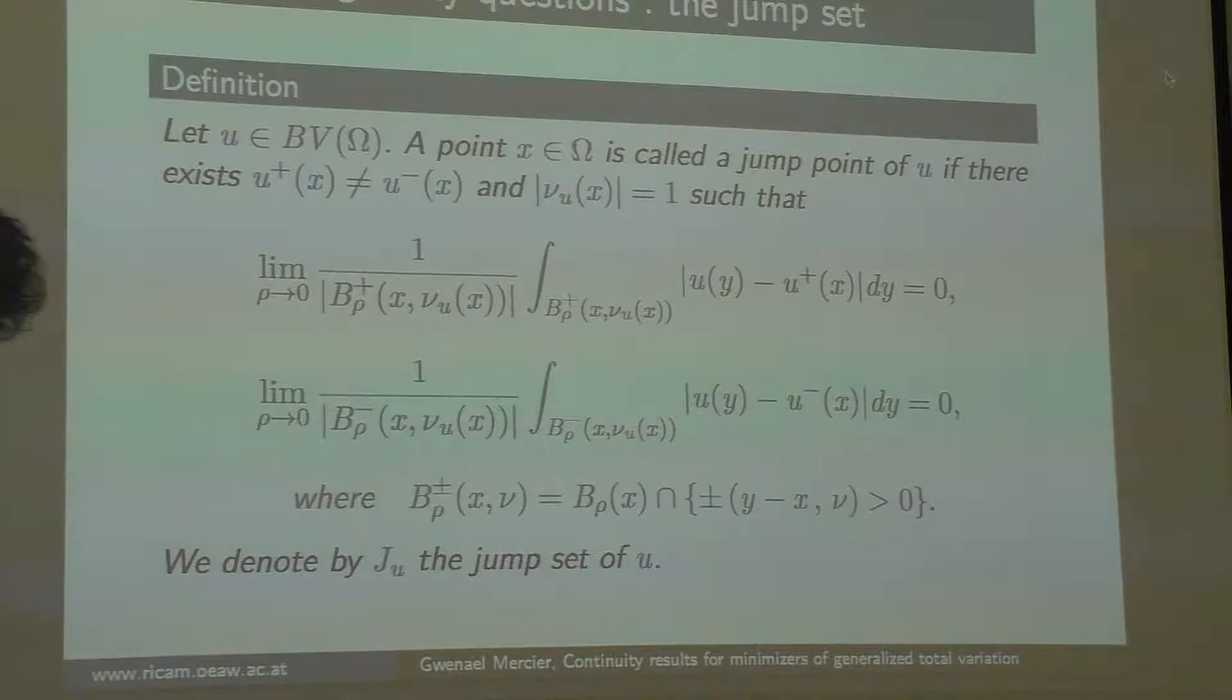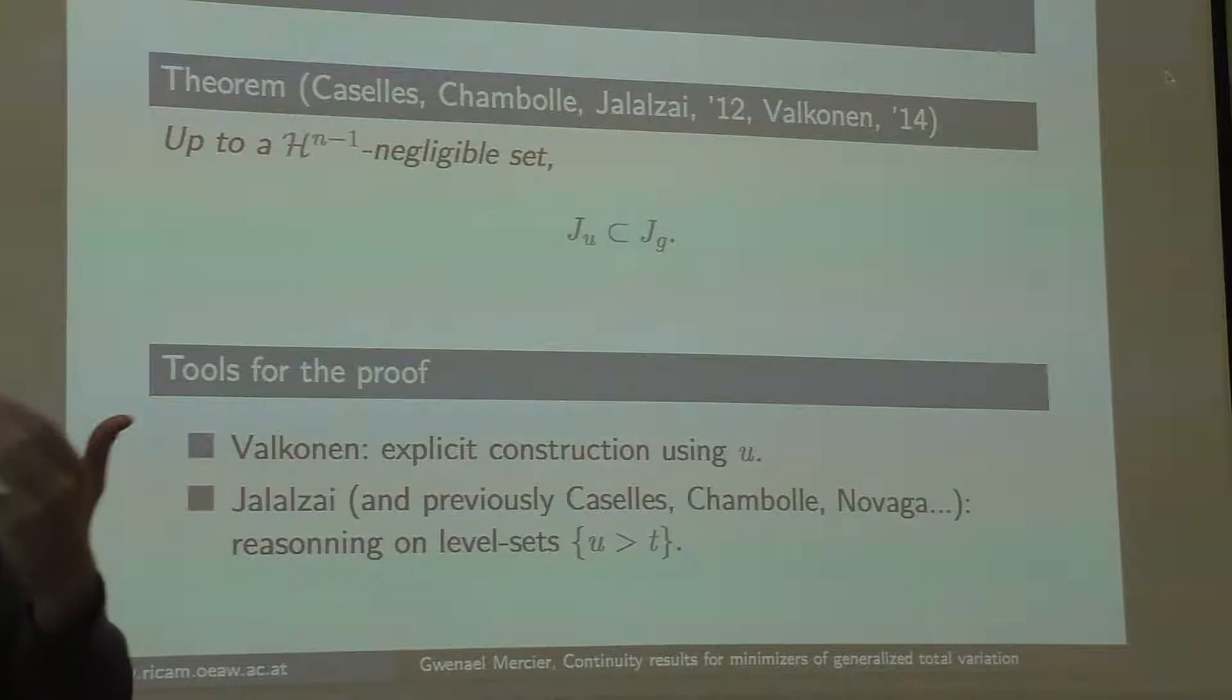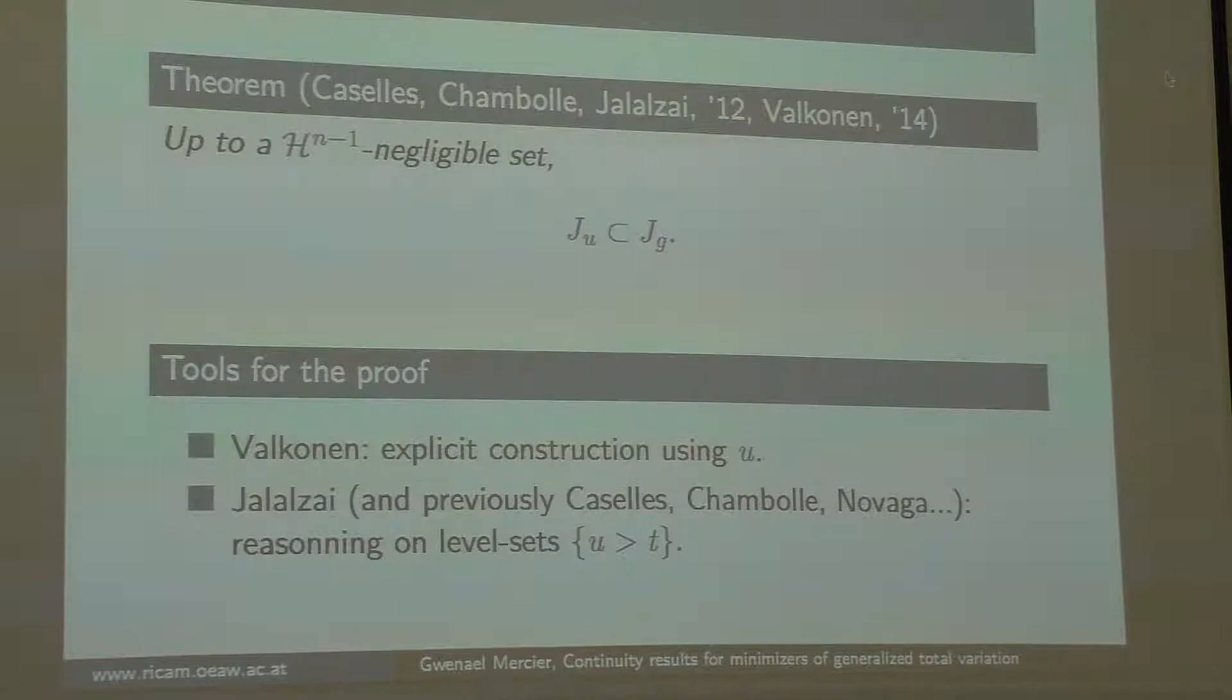That is just a generalization of a left limit, right limit. Here there are some results, first by Caselles, Chambolle, and Jalalzai in 2012, and later Valkonen in 2014 with more general energies. They say that basically, denoising, you don't create jumps, which is already good. It means for a picture, you take something, you observe something, you denoise it, you will not create edges, fortunately. That's a nice result.